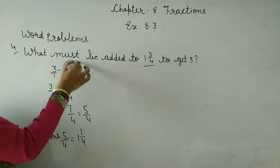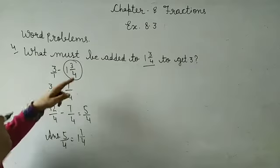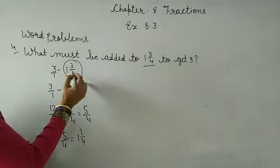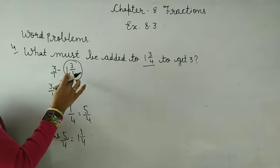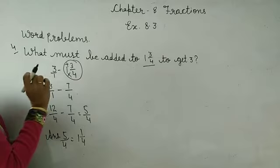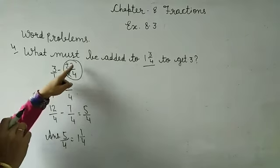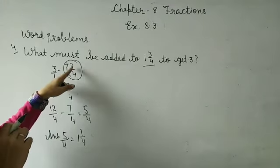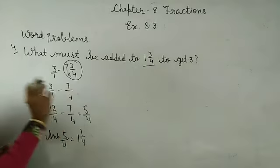First, we need to change this mixed fraction. How do we do? 4 multiply by 1, and then plus 3. So what do we get? 7 upon 4.